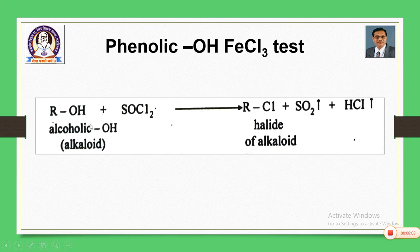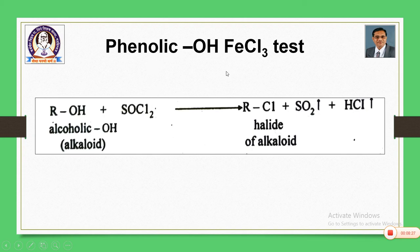If the compound contains a phenolic OH group, then the presence of phenolic OH is confirmed by reaction between the compound and thionyl chloride. The corresponding halide is formed with the aromatic system, with elimination of SO₂ and HCl. So presence of phenolic OH is investigated by reaction between the alkaloid and thionyl chloride.